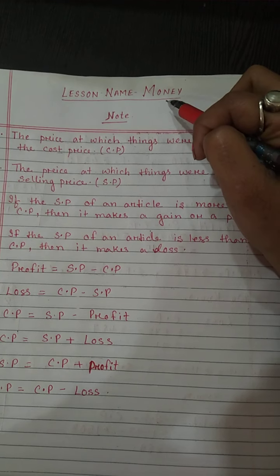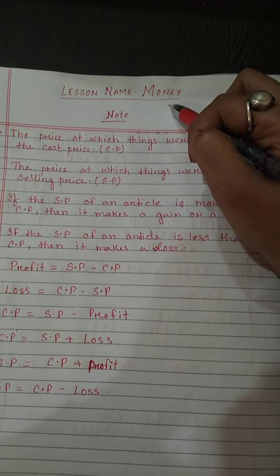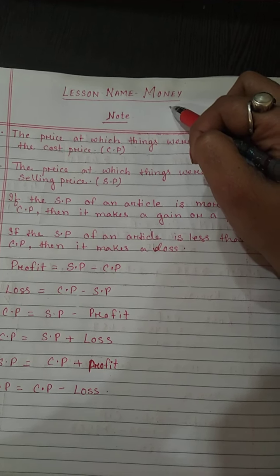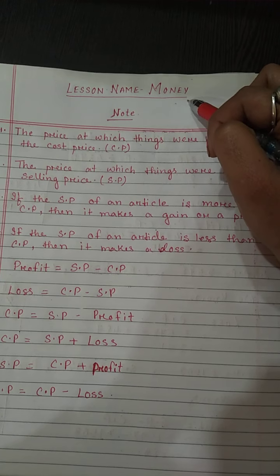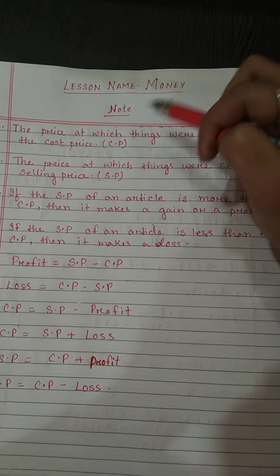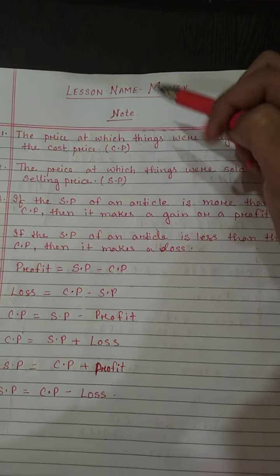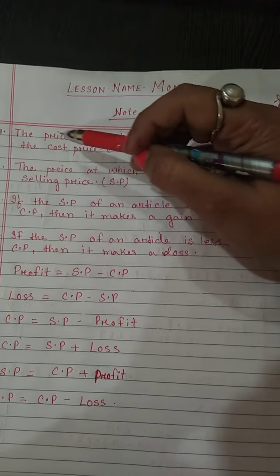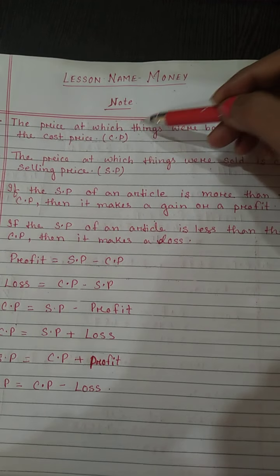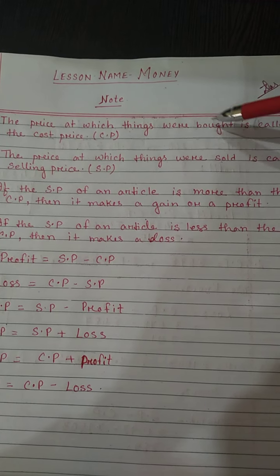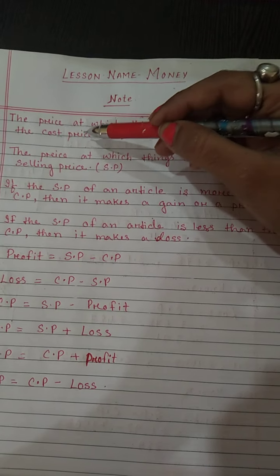Good morning children. We will start a new lesson — lesson name is 'Money.' So before starting this lesson, a few notes are there. First one: the price at which things were bought is called cost price.